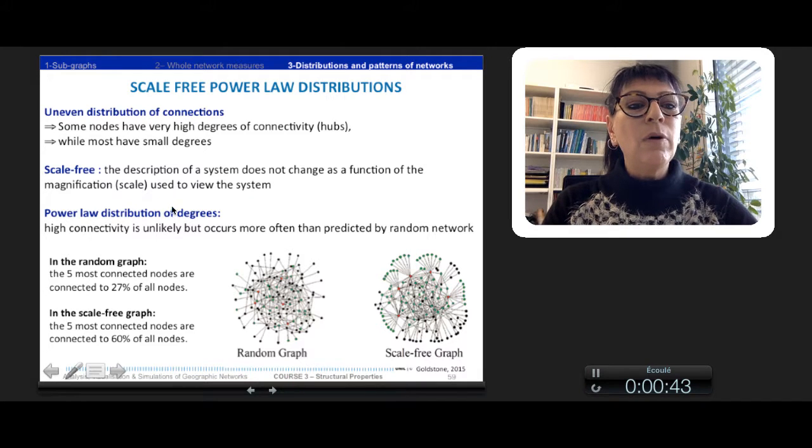In the power-law distribution of degree, there is a high connectivity that is unlikely to occur more often than predicted by a random network.